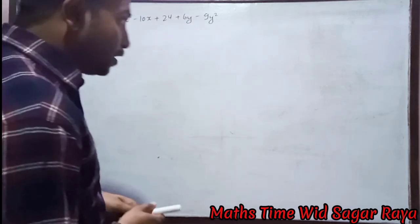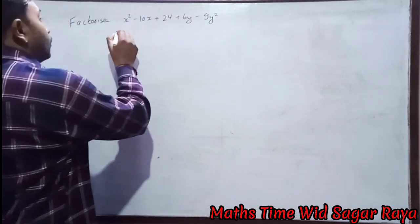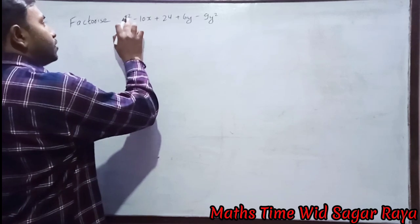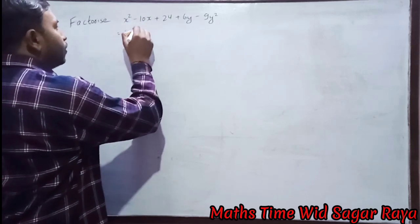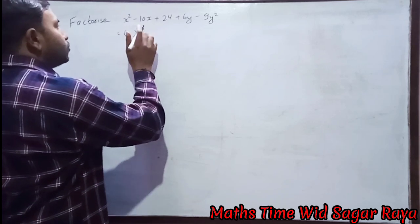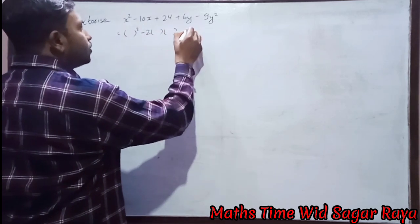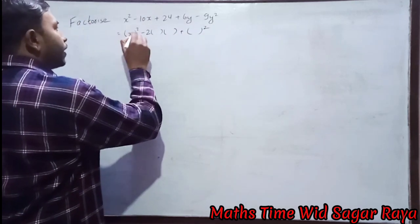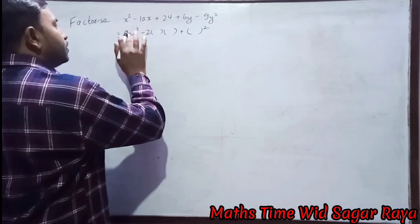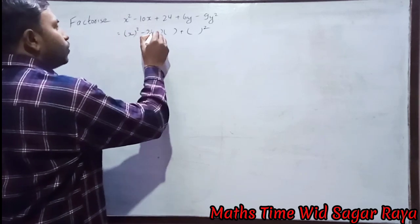First of all, here is x² - 10x. Since there is a minus sign, we will make the format for a² - 2ab + b². So x² we can write as (x)², and instead of a there is x, so we will put here x.